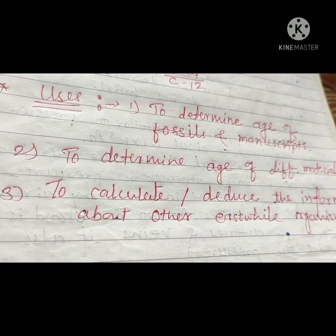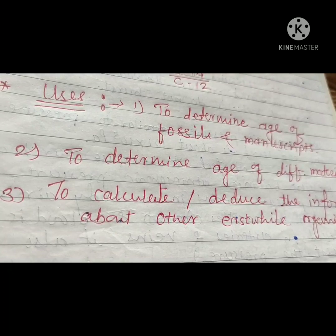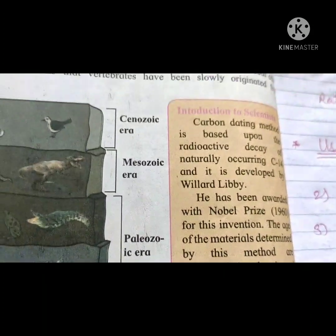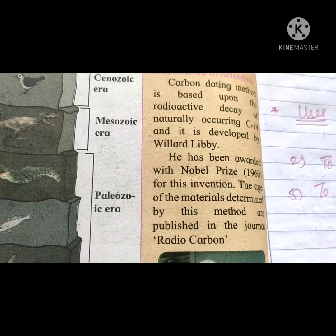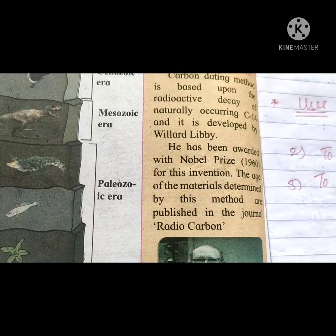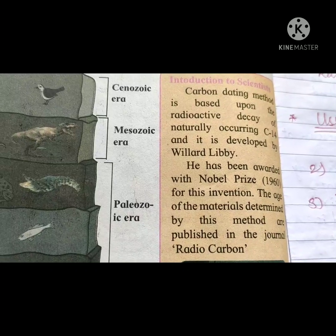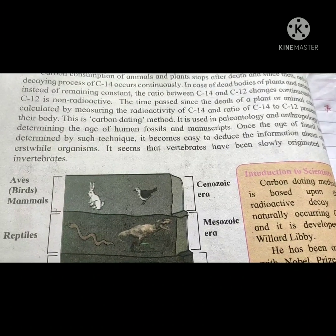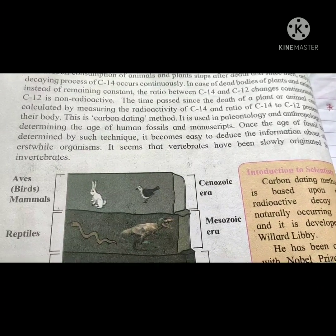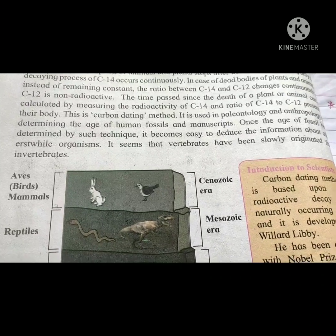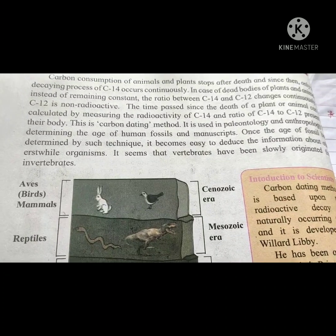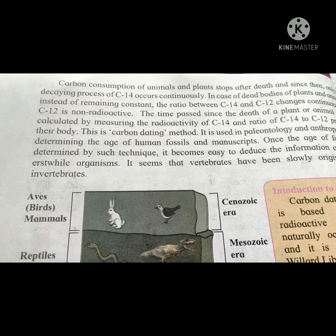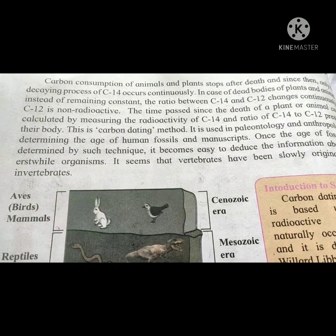This technique is very important because it uses the radioactive decay of naturally occurring carbon-14. It was developed by Willard Libby, who was awarded the Nobel Prize in 1960 for this invention of carbon dating. In evolution, once the age of fossils is determined by carbon dating, it becomes easy to deduce information about them — for example, that vertebrates have slowly originated from invertebrates.